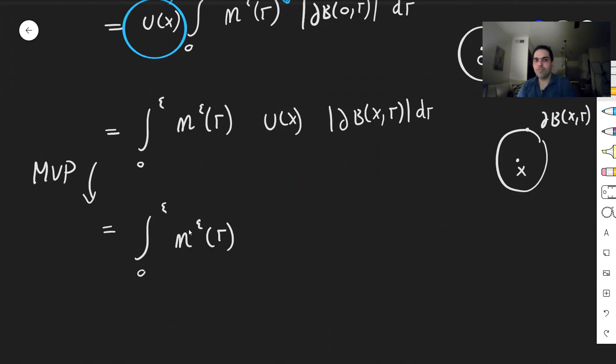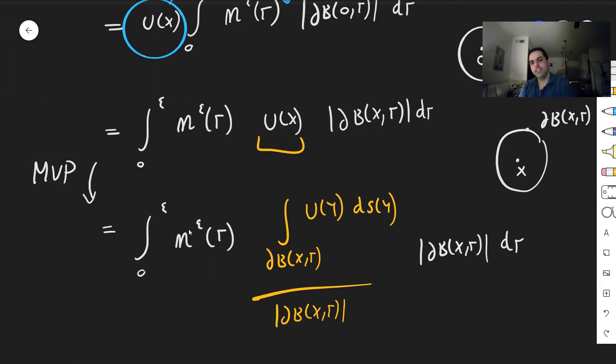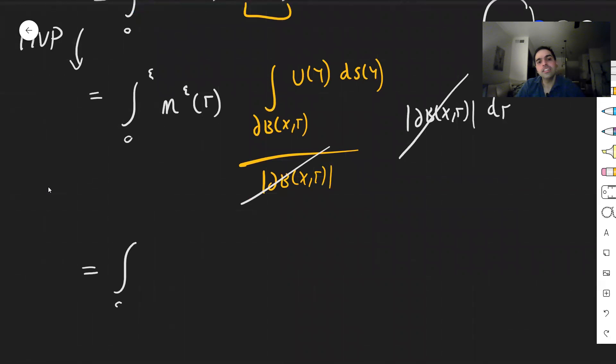So what does the mean value formula say? u of x is just the average value of u over that sphere. So integral of u of y ds of y over the surface area of that sphere. And times this, dr. And the nice thing is, so kind of this miracle happens, those two things cancel out. So what you're left with is the integral from zero to epsilon, eta epsilon of r, and then the surface integral u of y ds of y.